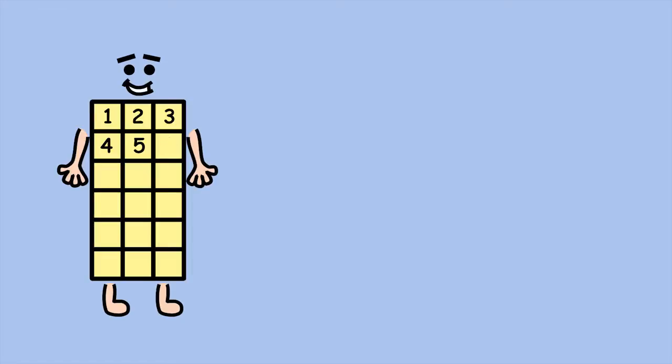But there's a quicker way than counting the squares one by one. Each row has three squares, so you can use skip counting by threes to add up the total number of squares: 3, 6, 9, 12, 15, 18.